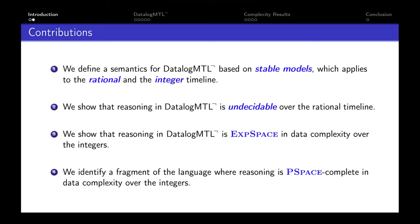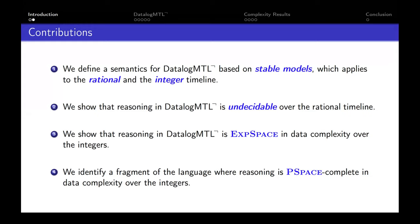In our paper, we define stable model semantics for DatalogMTL with negation, in a way that applies to both the rational and the integer timeline. We then consider the complexity of the reasoning problem — checking existence of a model. We show that over the rational timeline, surprisingly, it's undecidable. Over the integer timeline, it is EXPSPACE in data complexity. We also identify a fragment called the forward propagating fragment where it's PSPACE-complete in data complexity.